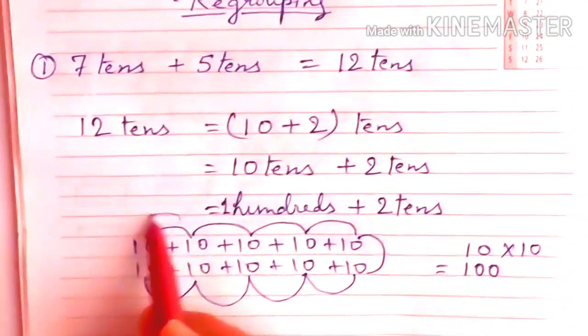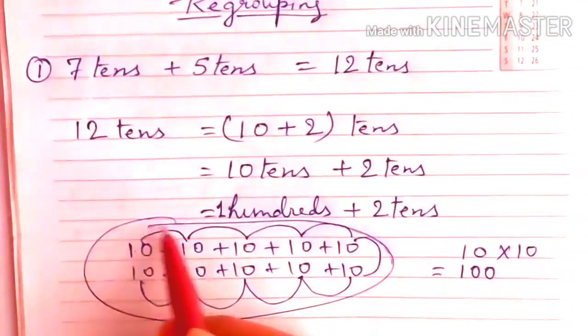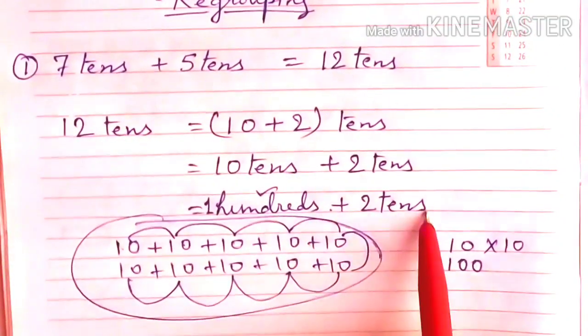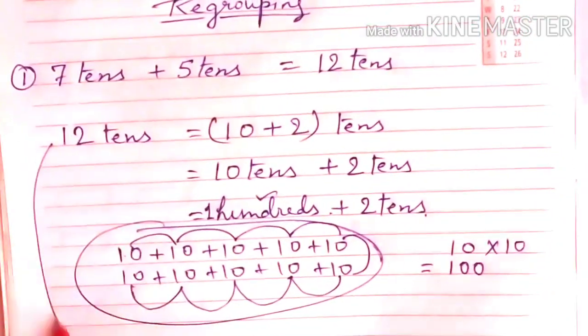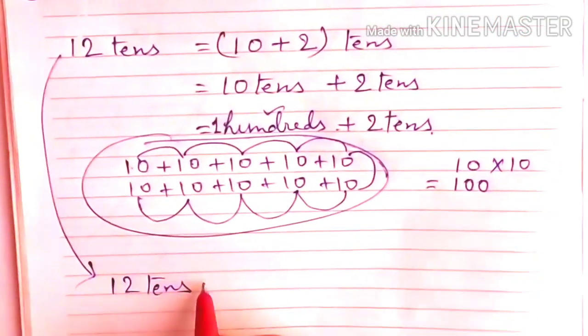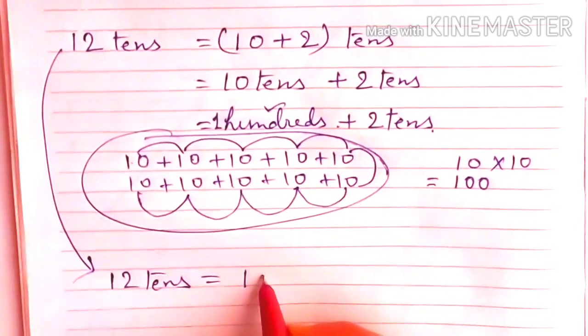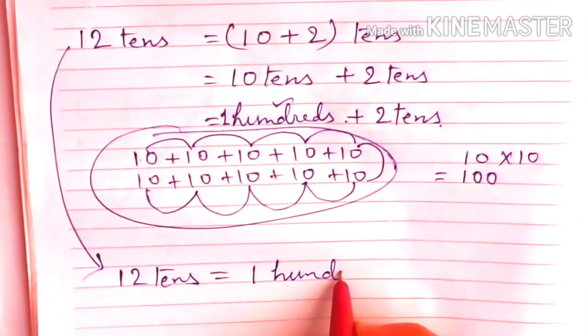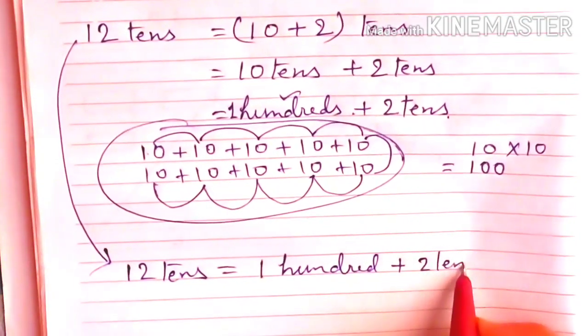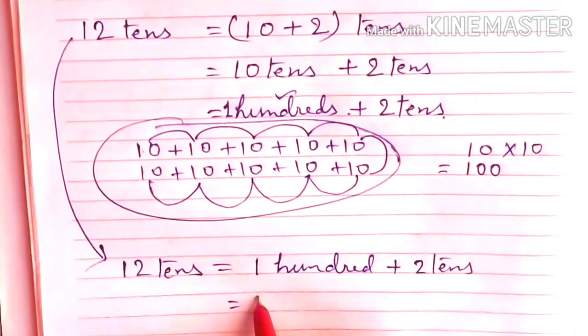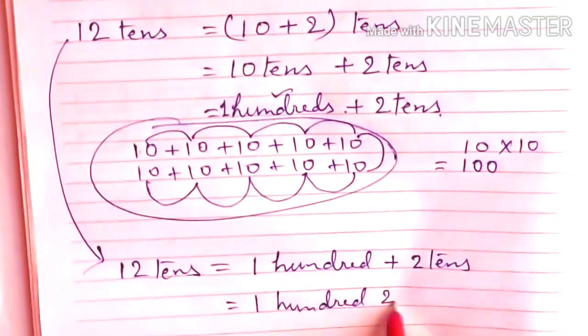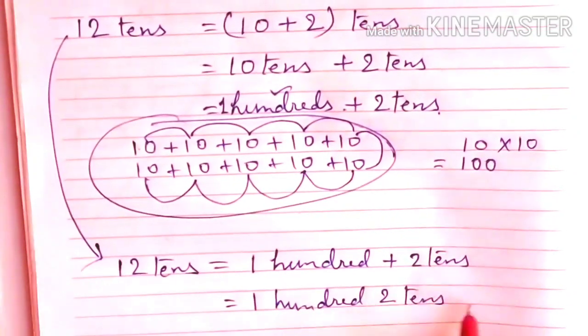So this way, what are we seeing? 10 tens give us 100 and plus 2 tens. That means this is 12 tens. 12 tens is equal to what? 100 plus 2 tens. That means we can write this as 1 hundred 2 tens. Okay?